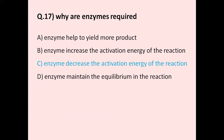Question number 17: Why are enzymes required? Option A enzyme helps to yield more product, option B enzyme increases the activation energy of the reaction, option C enzyme decreases the activation energy of the reaction, option D enzyme maintains the equilibrium in the reaction. The correct answer is option C — enzyme decreases the activation energy of the reaction.